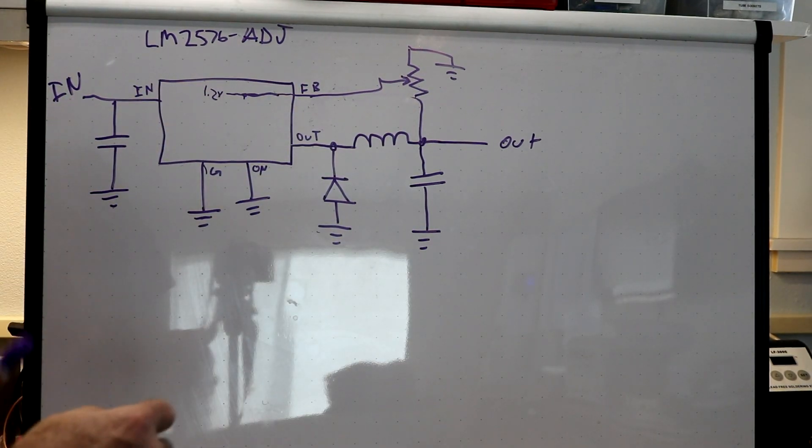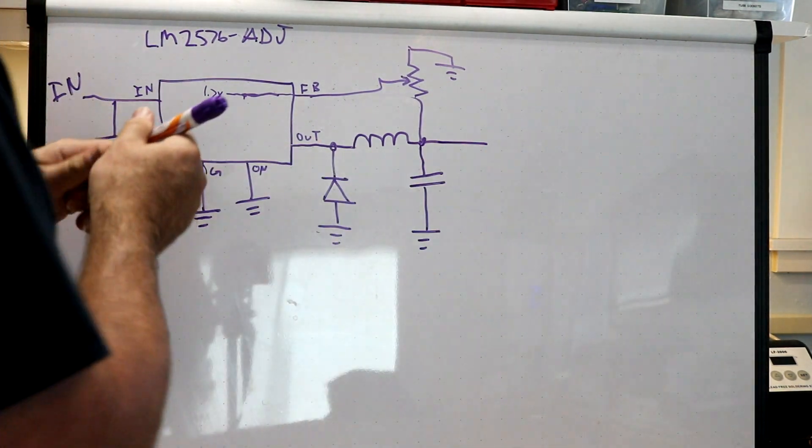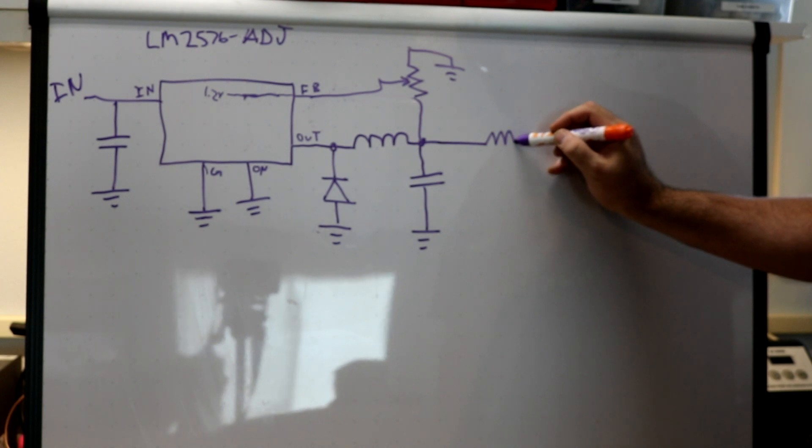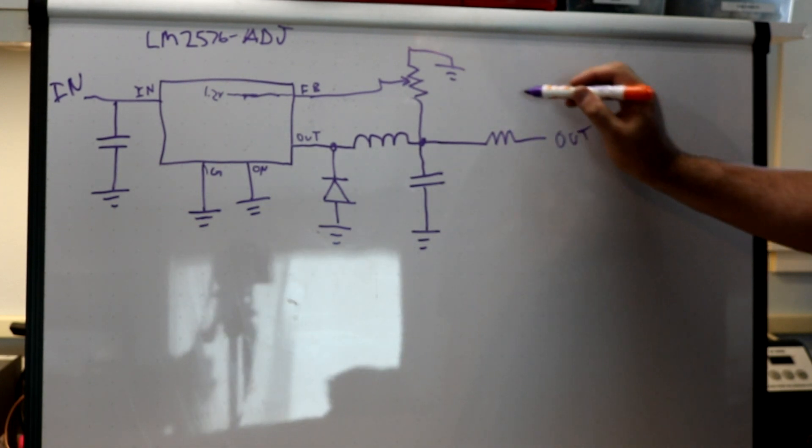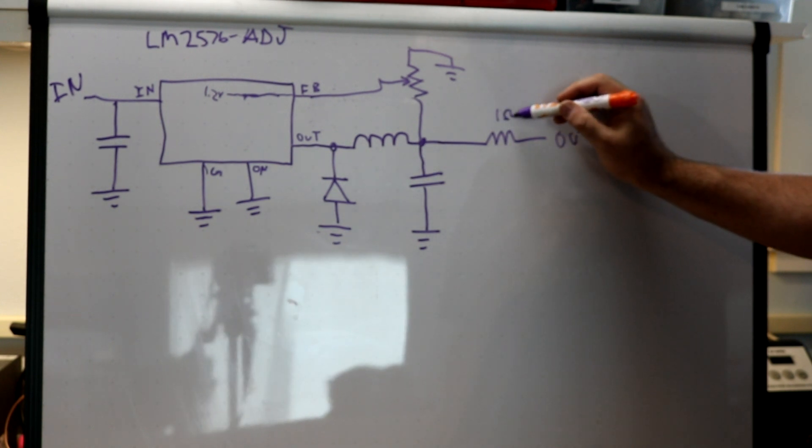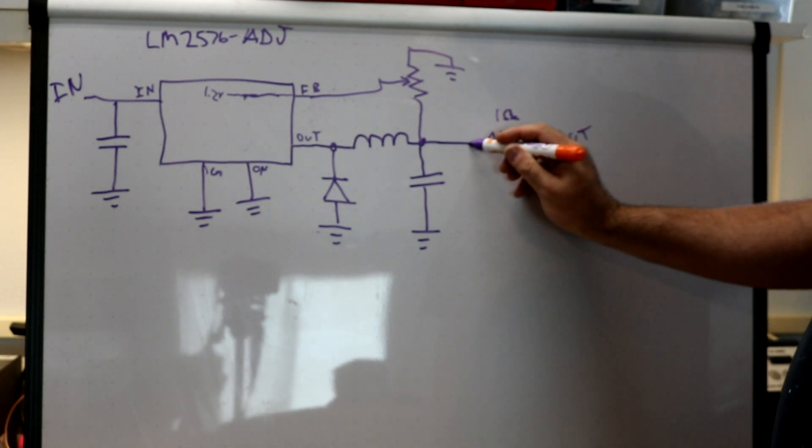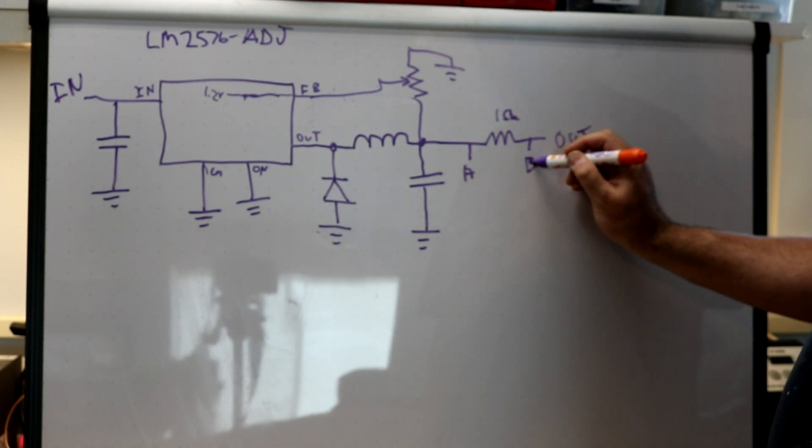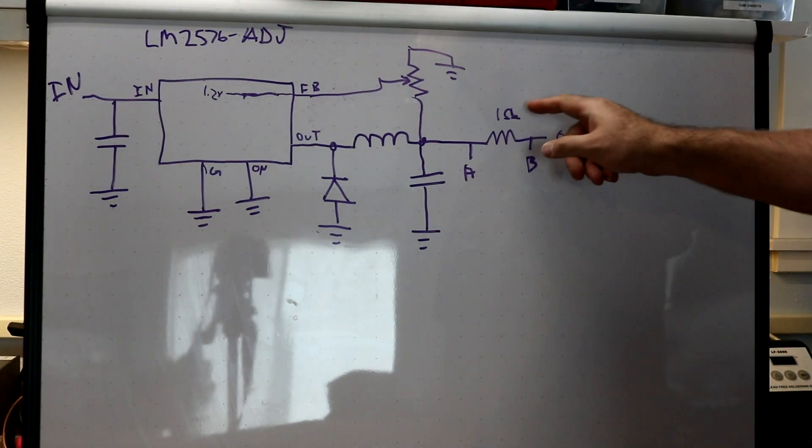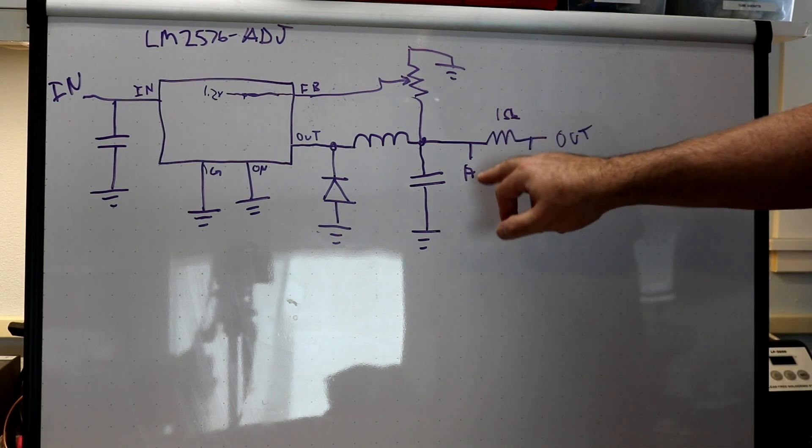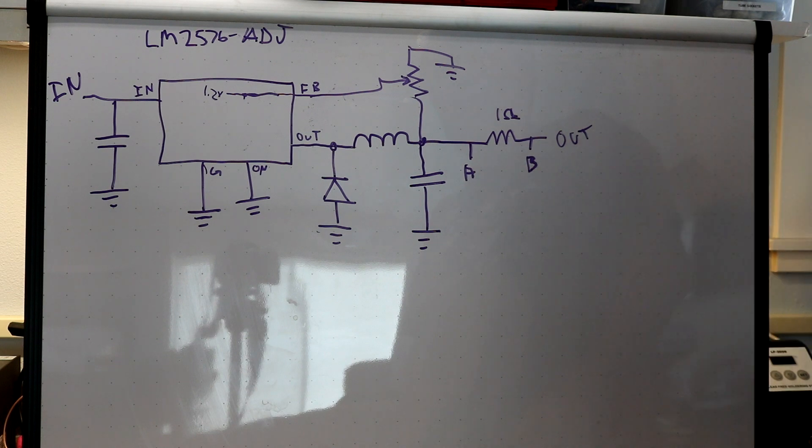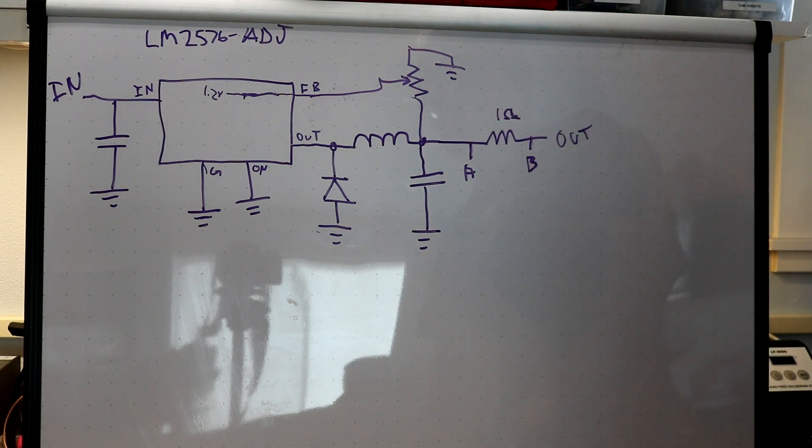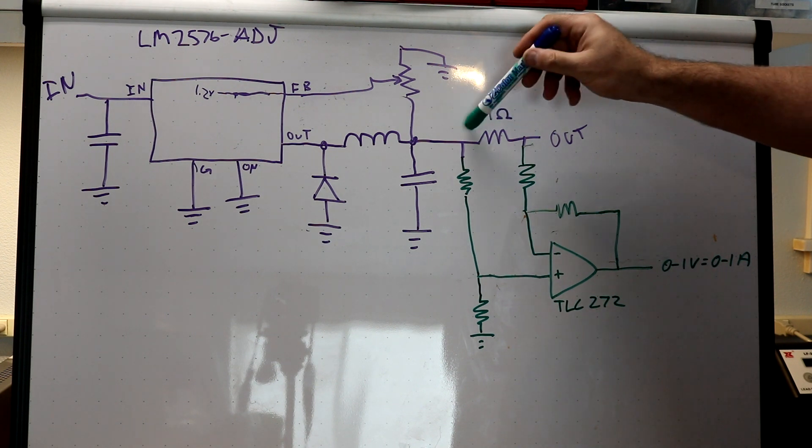So for the next step I'd like to add current limiting to this power supply. The first step to get current limiting is going to be to measure the current. So what we can do is we can put a resistor here. And if it is a 1 ohm resistor and then we can measure these two points A and B. We know that by Ohm's law 1 amp across 1 ohm will be 1 volt. So if the difference between these two pins is 1 volt then that means 1 amp is passing out the output. If it was the difference between these two pins was 0.1 volts then it would mean 100 milliamps is going through the output.